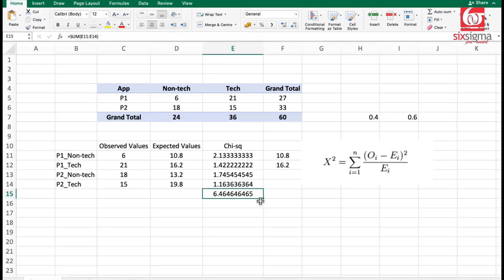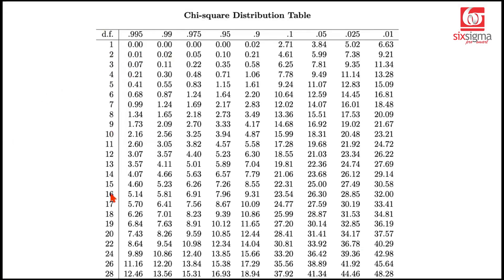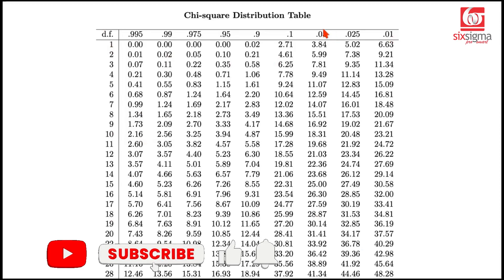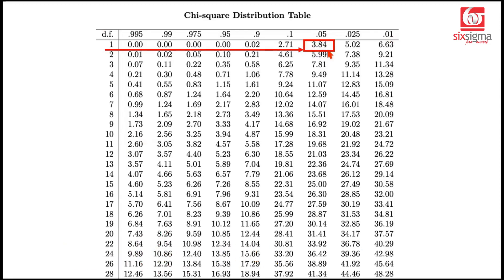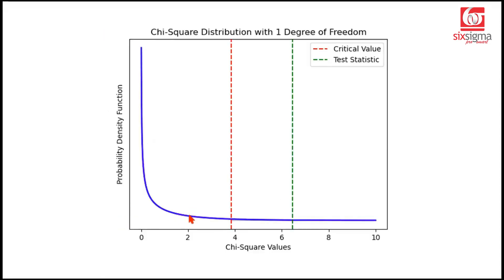How do we decide whether to reject or fail to reject the null hypothesis based on this? We need to get the critical value from the chi-square table. Our case has one degree of freedom, and we are looking at a five percent level of significance. The critical value is 3.84. So we have the critical value at 3.84, and the region to the right is the rejection region. Our test statistic falls within this rejection region.